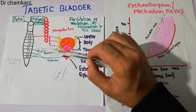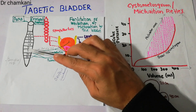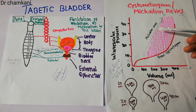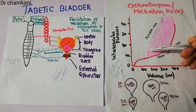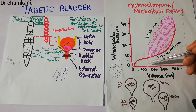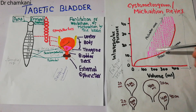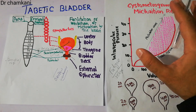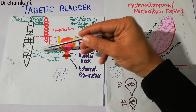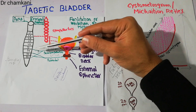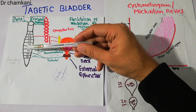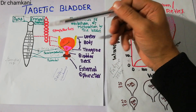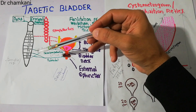So the urine in the bladder is detected by sensory stretch receptors. These receptors send signals to the spinal cord, and the spinal cord sends motor signals back to the urinary bladder, causing contraction. If the volume is less, the contraction is less and weaker; as the volume increases, the contraction waves and their strength keep increasing. These nerve fibers — carrying signals from the bladder to the spinal cord and back — act as essential pathways.